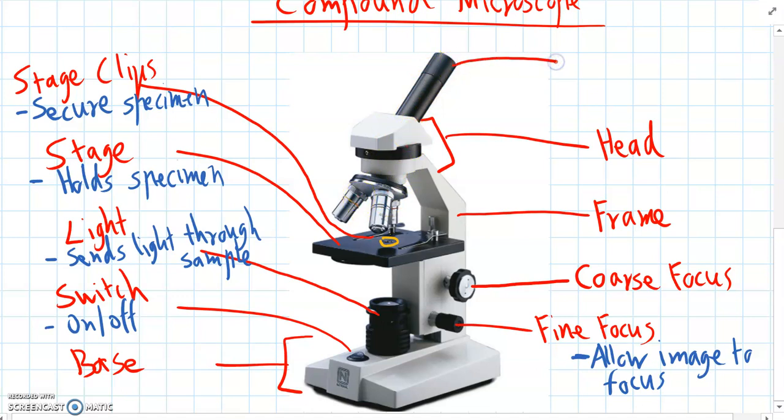So the top part we have the eyepiece lens. This is the lens that we look through to actually see the image.